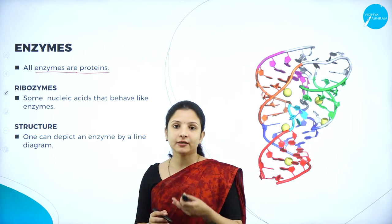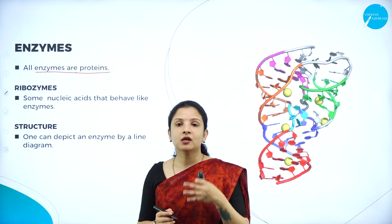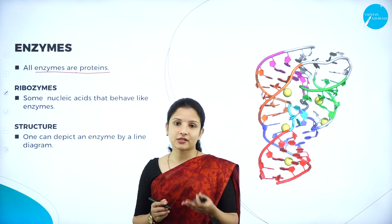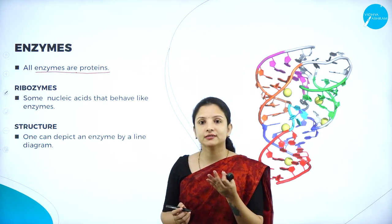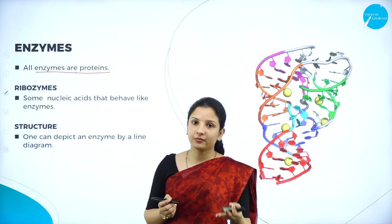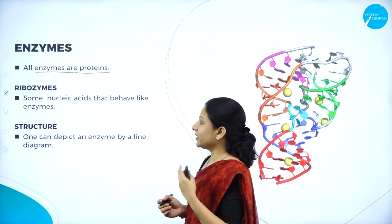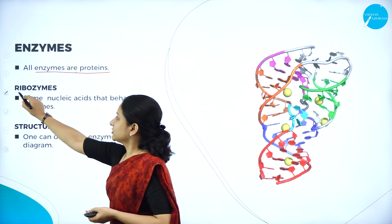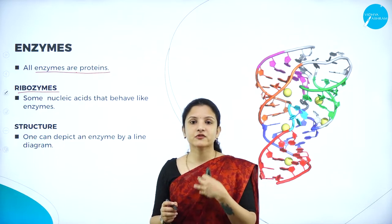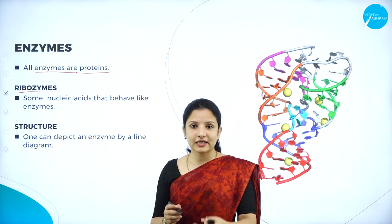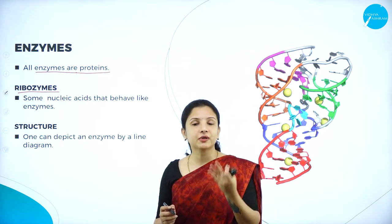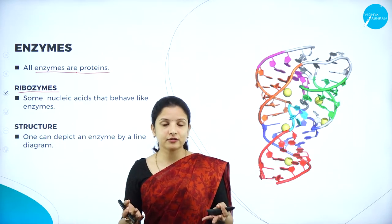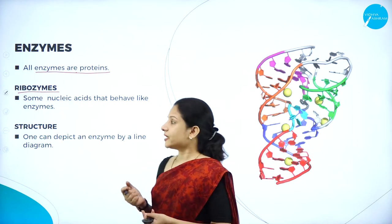There is a special class of enzymes produced by nucleic acids. DNA and RNA — deoxyribonucleic acid and ribonucleic acid — are made up of nucleotides such as adenine, guanine, cytosine, thymine, and in RNA, uracil instead of thymine. These nucleic acids can behave like enzymes, and those nucleic acids which behave like enzymes are called ribozymes.